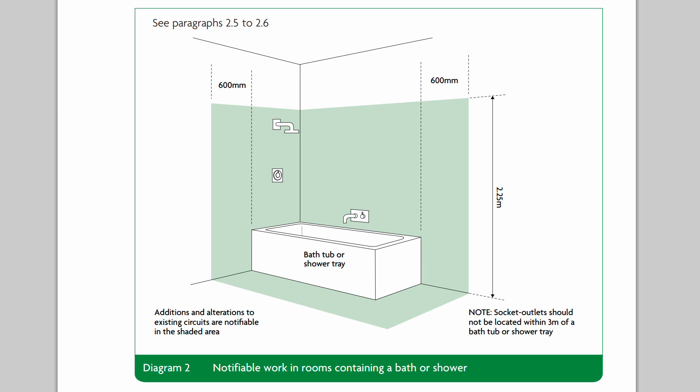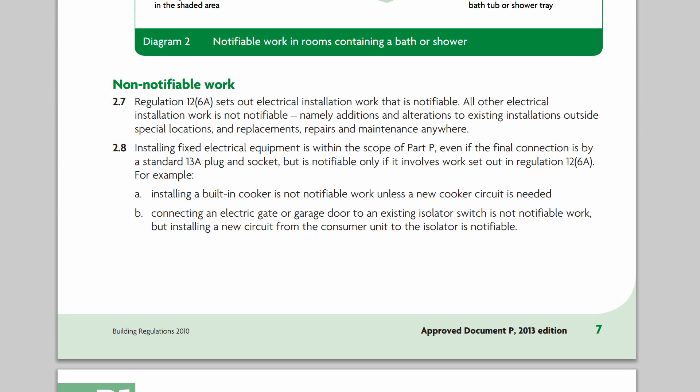The special location zone extends 600mm from the bath or shower tray in all directions and up to a height of 2.25m from floor level. Anything in that area is considered notifiable work. There is also a note from BS 7671 that socket outlets should not be located within 3 metres of it. In a typical bathroom, only a few things will be within that zone — electric showers being the prime example, possibly an extractor fan. Everything else, such as lighting and towel rails, is not notifiable.